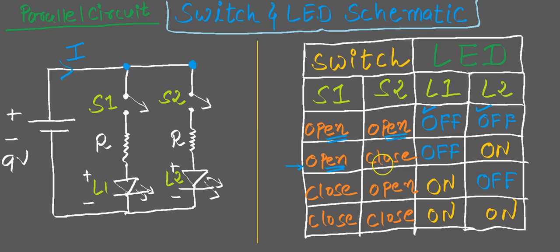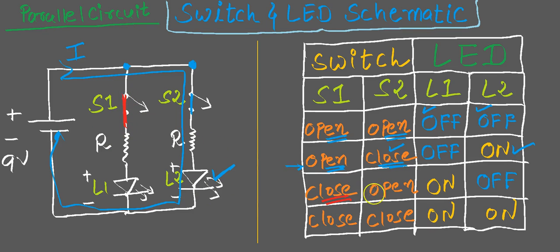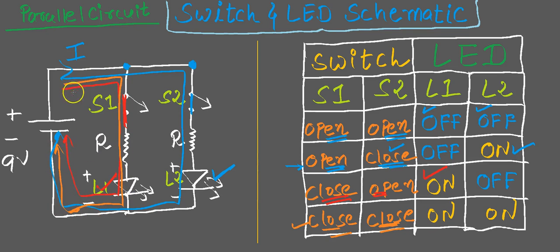With S1 open and S2 closed, no current flows through switch 1, so LED 2 would be on and LED 1 would be off. If switch 1 is closed and switch 2 is open, current flows only through path 1 through switch 1 — LED 1 would glow and LED 2 would be off. If both switches S1 and S2 are closed, current flows through both circuits, and both L1 and L2 would be on.